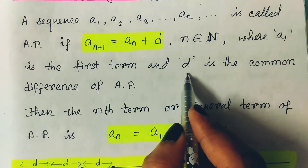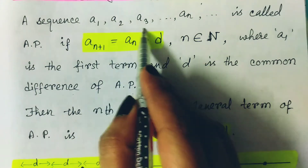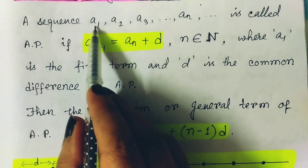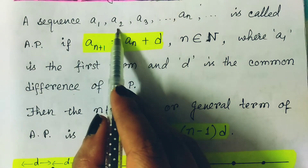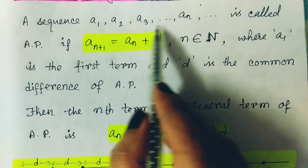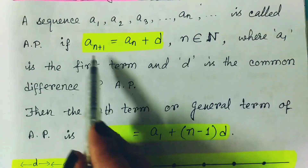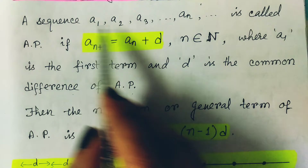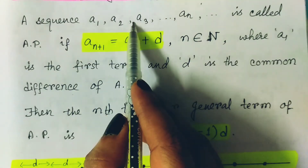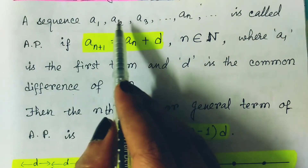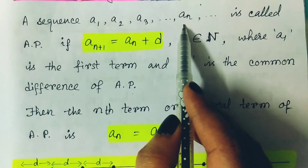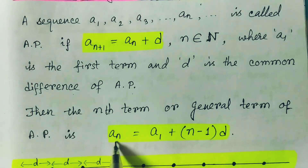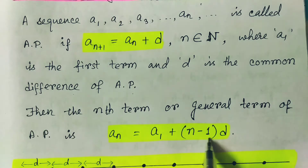Common difference means between any two consecutive numbers, there is the same difference. So from here we can say that if you know a1, then a1 plus d is a2, a2 plus d is a3, a3 plus d is a4, and likewise it continues. If you want to know the nth term, from a1 to a3 the distance is 2d, a1 to a4 the distance is 3d. Similarly, a1 to the nth term, the distance is (n minus 1)d, so an equals a1 plus (n minus 1)d.